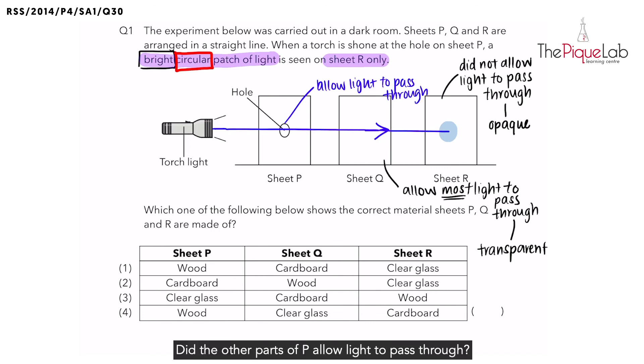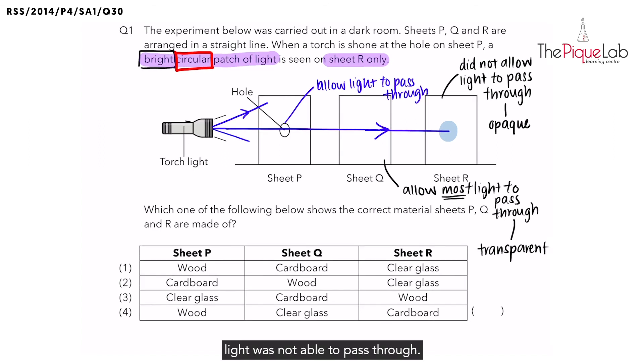But what about the other parts of P? Did the other parts of P allow light to pass through? If the other parts of P allow light to pass through, then you wouldn't be able to observe a circular patch of light. In fact, you will observe perhaps a rectangular patch of light. Precisely why are we able to only see a circular patch? It's because P only allowed light to pass through the hole. But for the other parts of P, light was not able to pass through. What is the transparency of an object that does not allow light to pass through? Once again, it's similar to sheet R. P must be an opaque material.